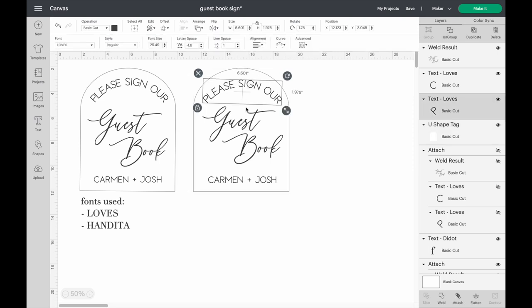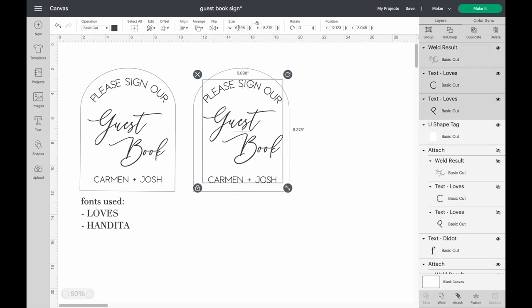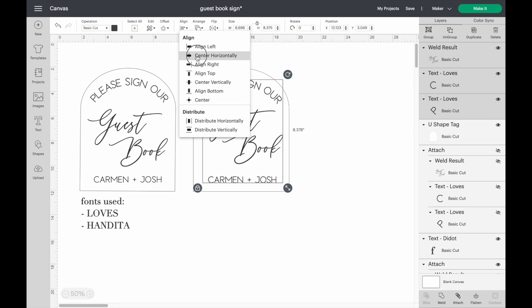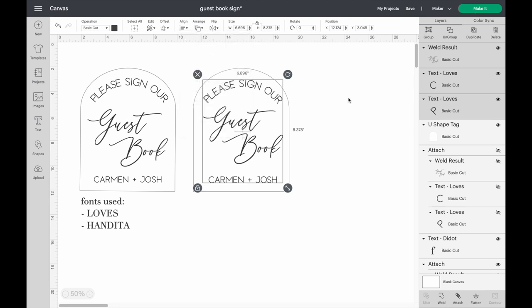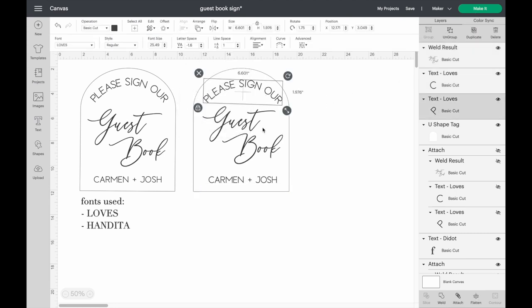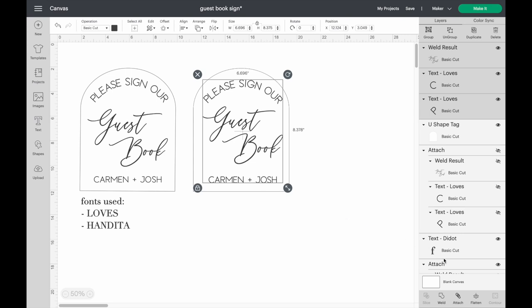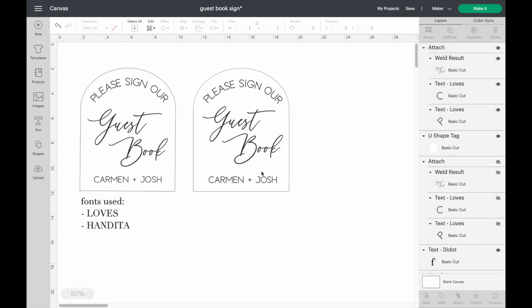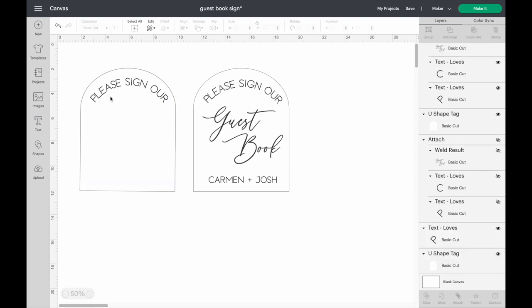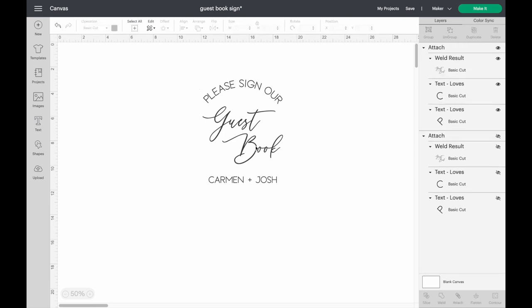Now we're going to go ahead and get everything centered. We're just going to grab each of these pieces here and just go over to align and center horizontally, and that's going to scoot everything right to where it needs to be. Then we're going to go ahead and attach all of this because we want it to cut in one piece. I'm going to go ahead and delete everything else that I have here except for the words that I want to cut.